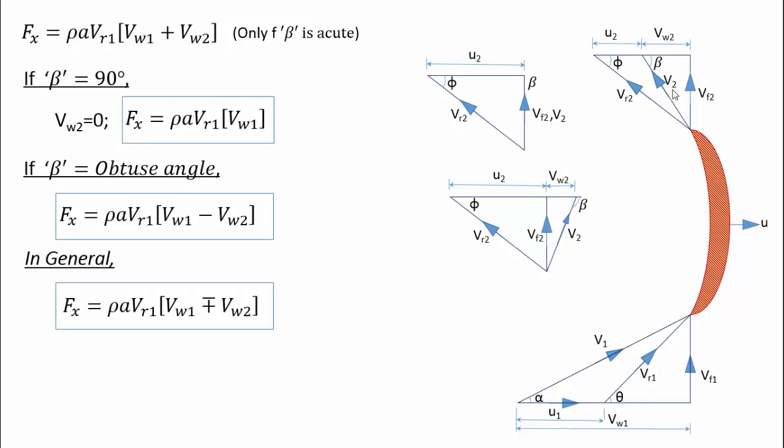We know that work done is equal to force times velocity, hence the work done per second expression can be written as Fx·u.